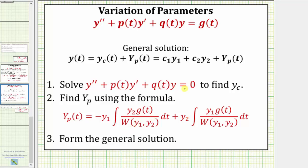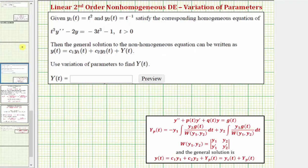Once we find the complementary function y sub c and a particular solution Y sub p, we form the general solution. But for our example we're already given y sub one and y sub two, and we're only asked to find Y sub p of t. Before we do, it's important to recognize that if the given differential equation is not in the correct form, we need it to be in the form where the first term is y double prime. So let's first put the equation in the correct form.